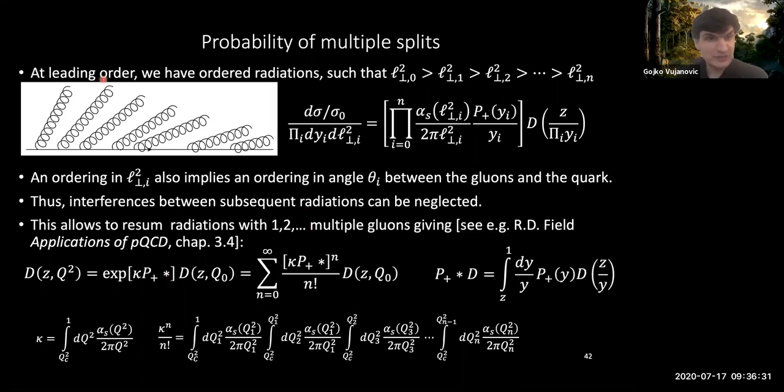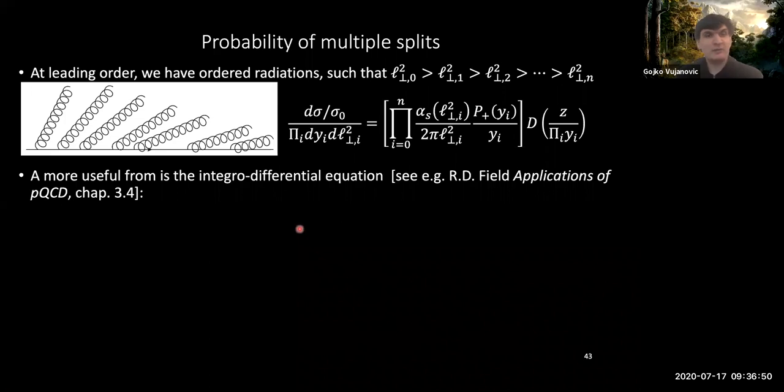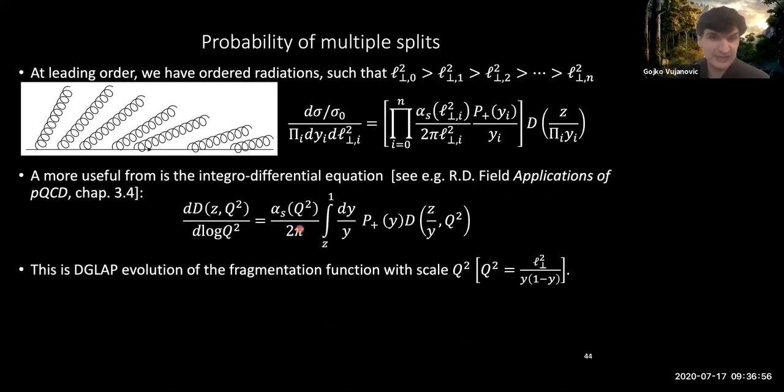And ultimately, what this is giving you is an evolution prescription for how your fragmentation function essentially ends up changing as a function of energy scale. So with this operator definition, although it's mathematically accurate, it's a little bit difficult to use in everyday life. So what is more useful is to actually use the integral differential form of this, and the way to obtain that is essentially to take a derivative of these fragmentation functions.